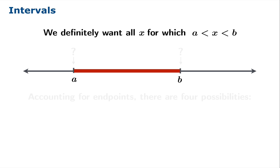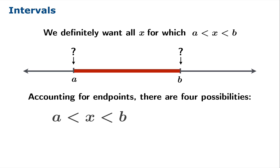We definitely want all x for which A is less than x is less than B. But the question is, do you want the endpoints? Accounting for all the possibilities, there are four options. You can either have neither endpoint, both endpoints, or you could include one or the other. These are the compound inequalities that go along with each choice.